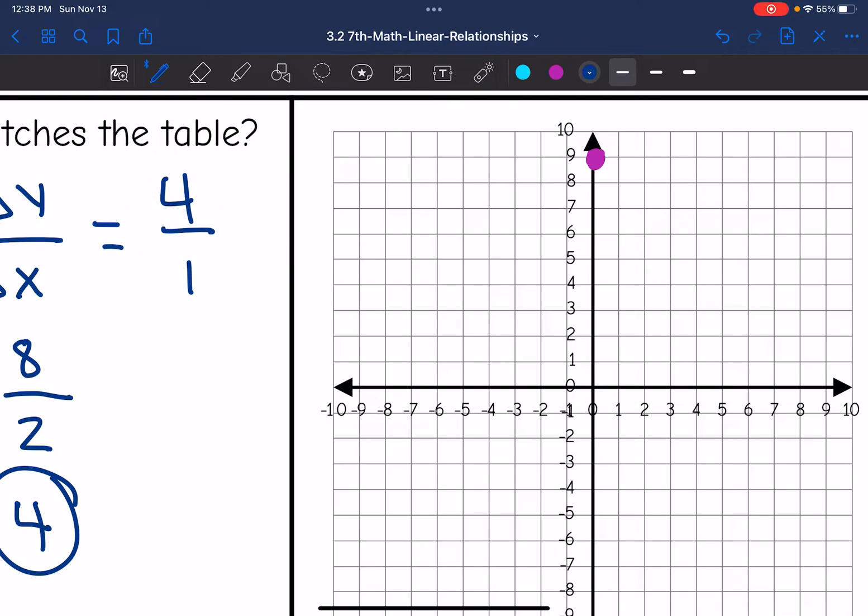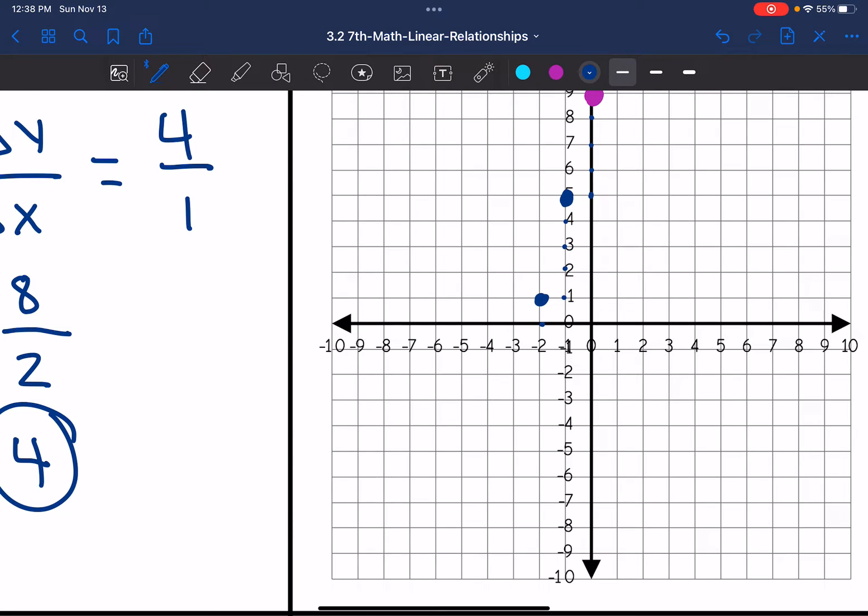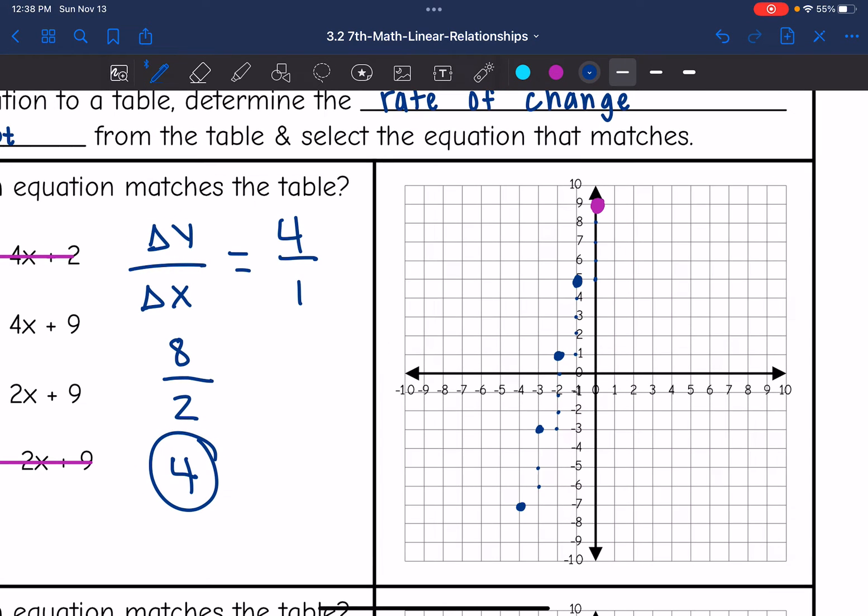So I'm going to go down 1, 2, 3, 4, decrease in the y values by 4, and then left 1, decrease in the x values by 1. I'll repeat this pattern: down 4, left 1, continuing until I have several points plotted. And now I just draw my line through these points.